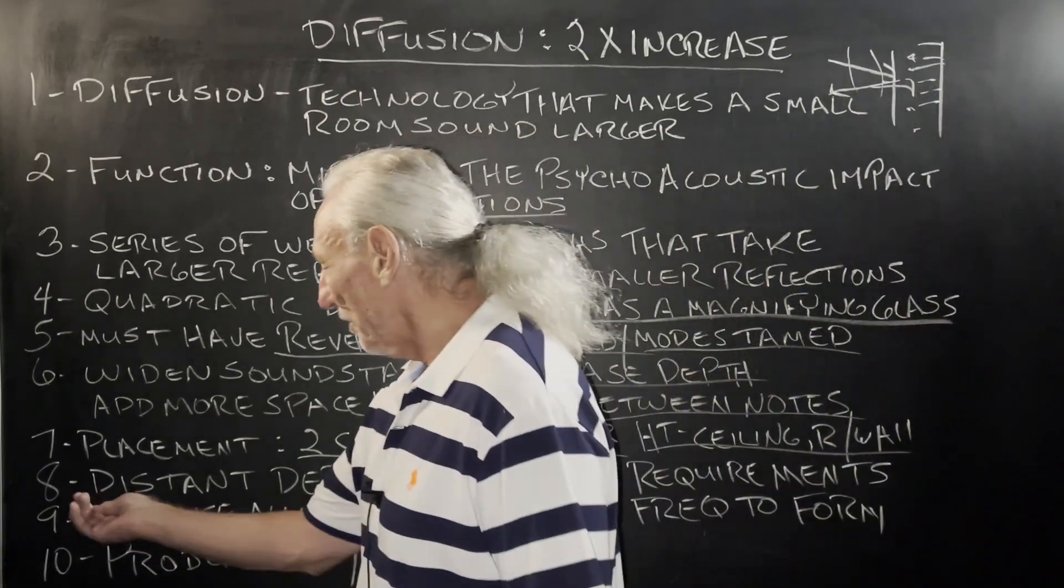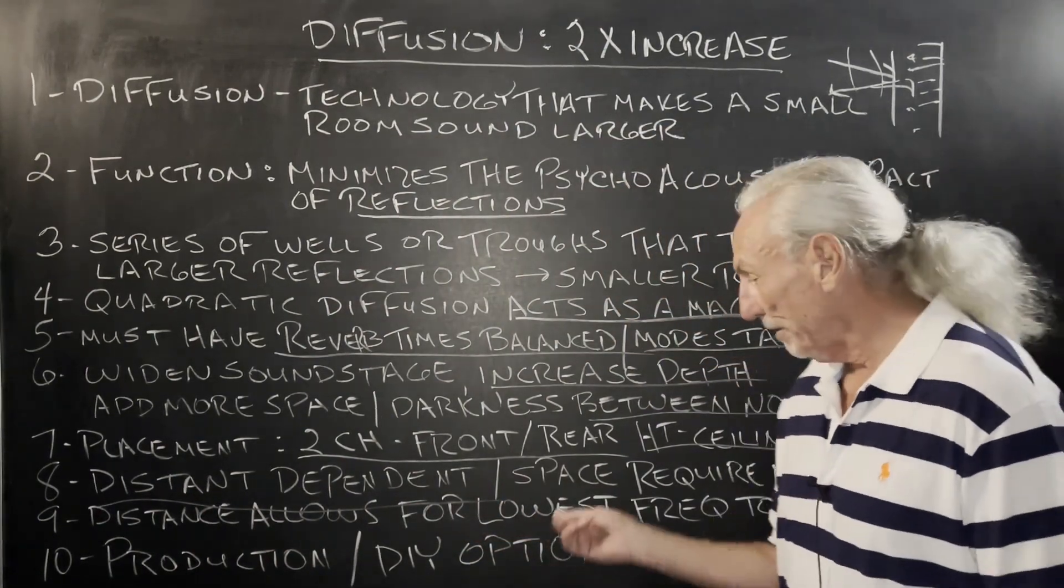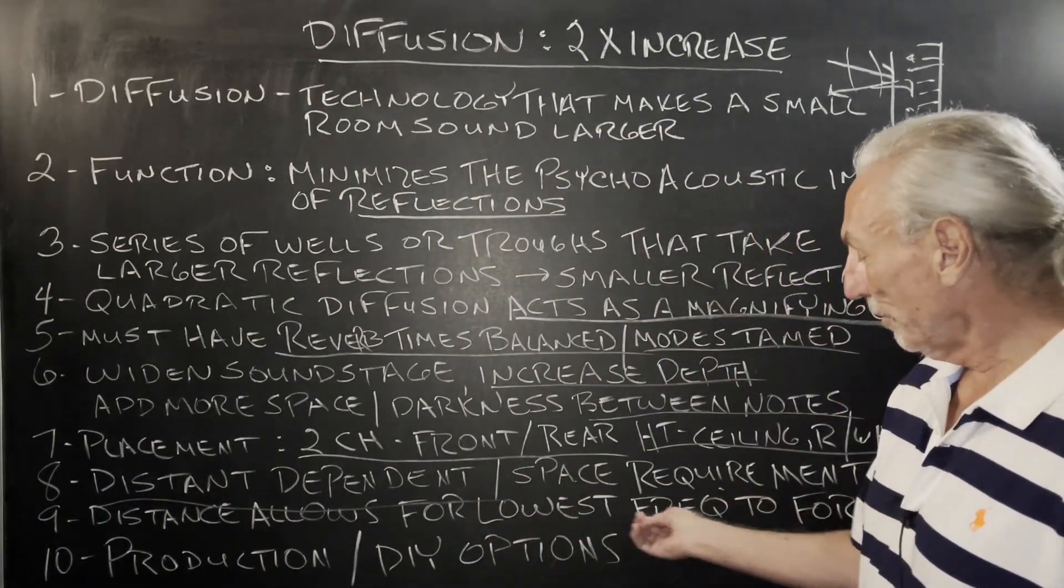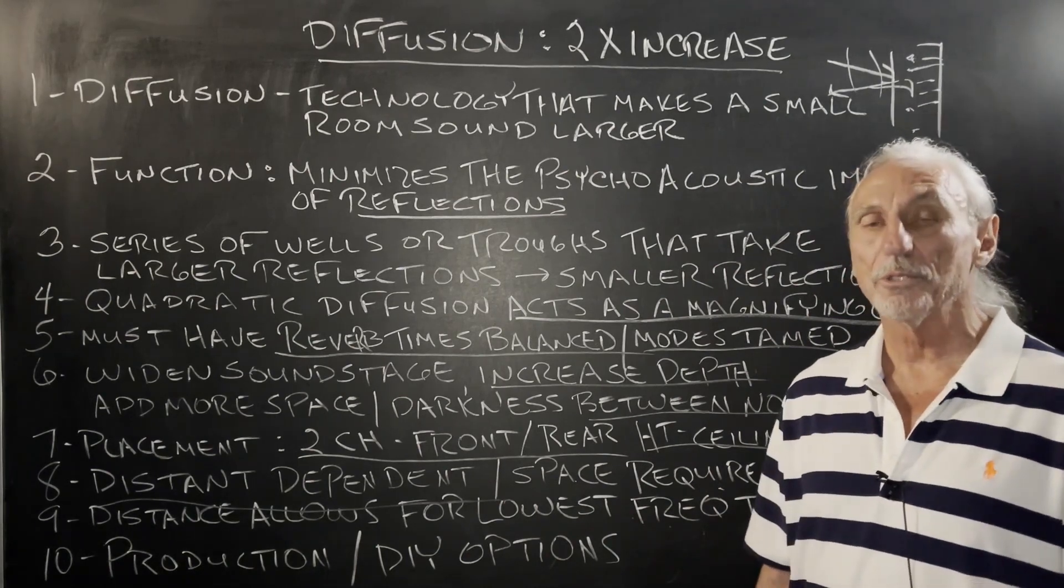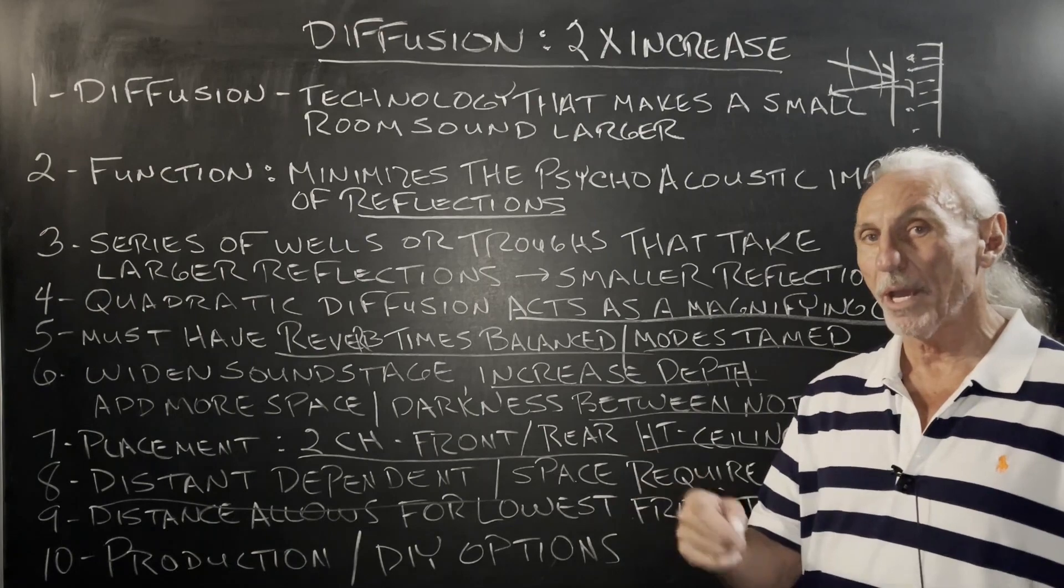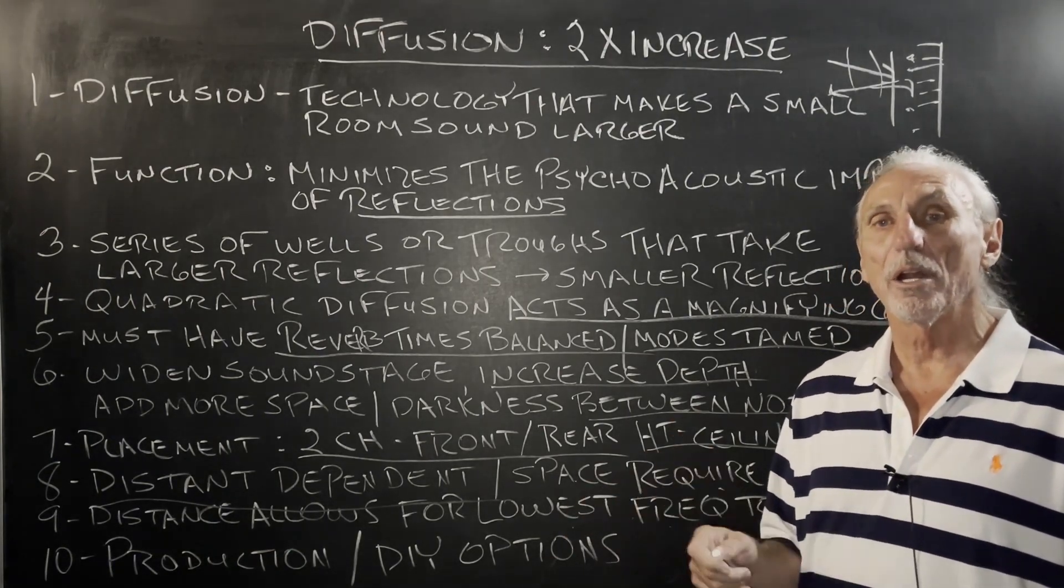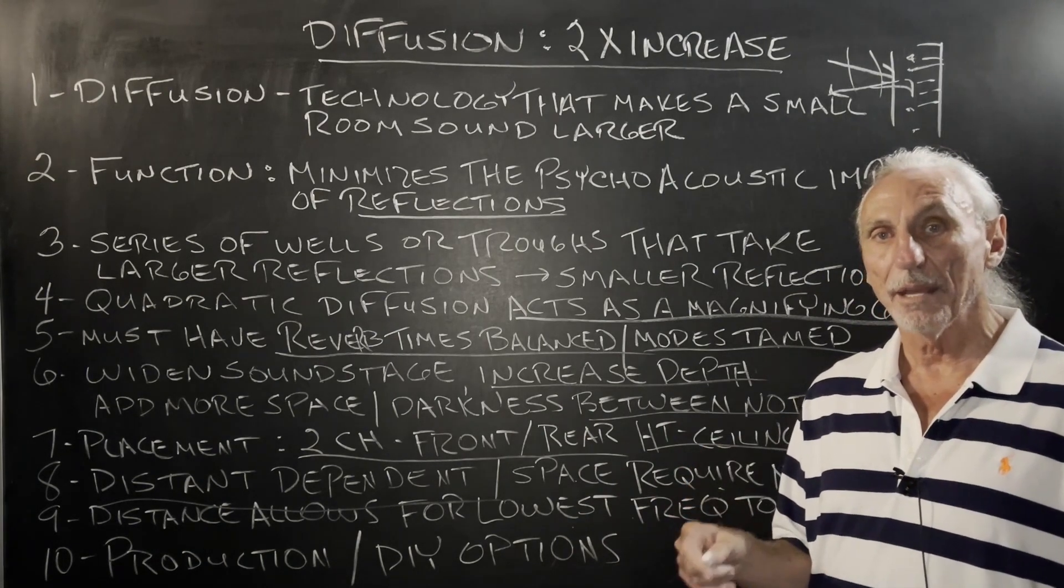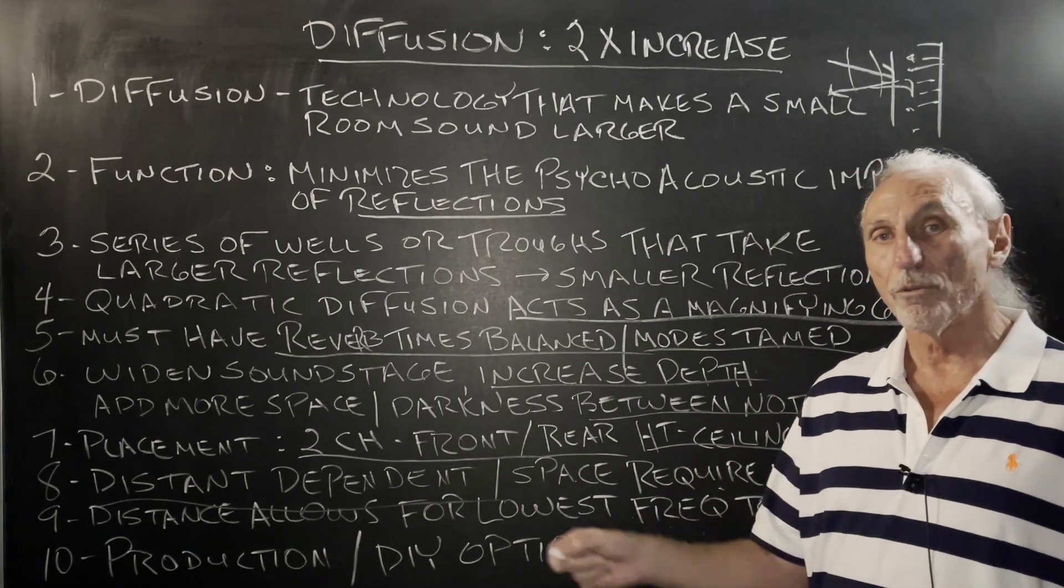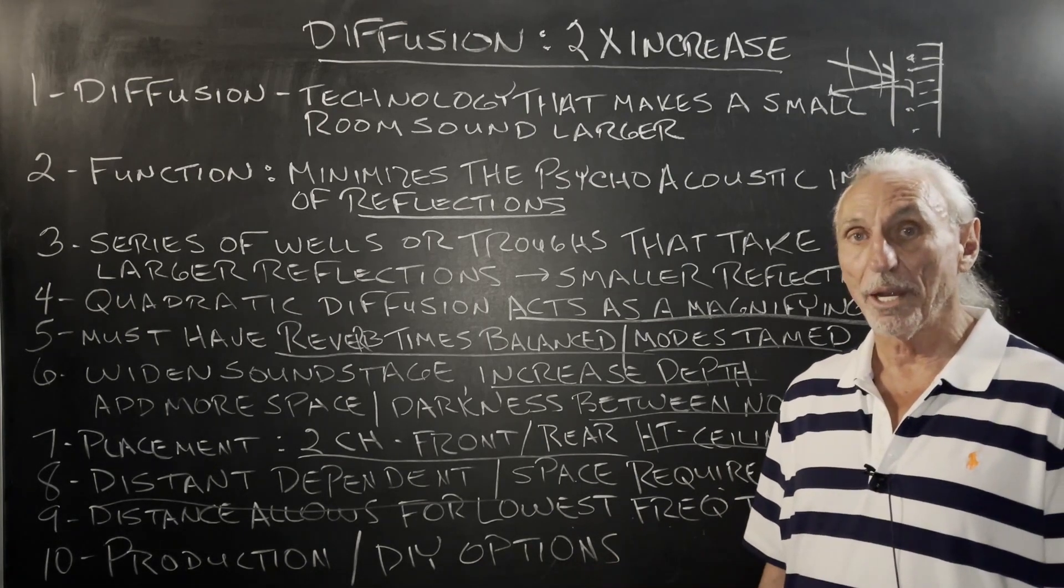Distance. Placement is very critical. It's distant dependent because you've got to have enough space requirement for the lowest frequency of your diffuser to fully form. So this is where quarter, half wavelength rules come into play. So you always want to try to get the largest prime number you can for quadratic diffusion for your usage and your space requirement and your budget, obviously.